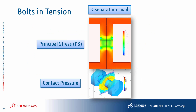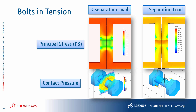Taking that 2950-pound separation load and applying it to the bolted assembly, we can compare two scenarios. At a load below the separation load, the principal stress 3 plot clearly shows compressive areas and healthy contact pressure. When the separation load of 2950 pounds is applied, the contact pressure plot shows literally no contact between the connected parts, and the compressive stress at the joint location is very nearly zero — confirming separation.